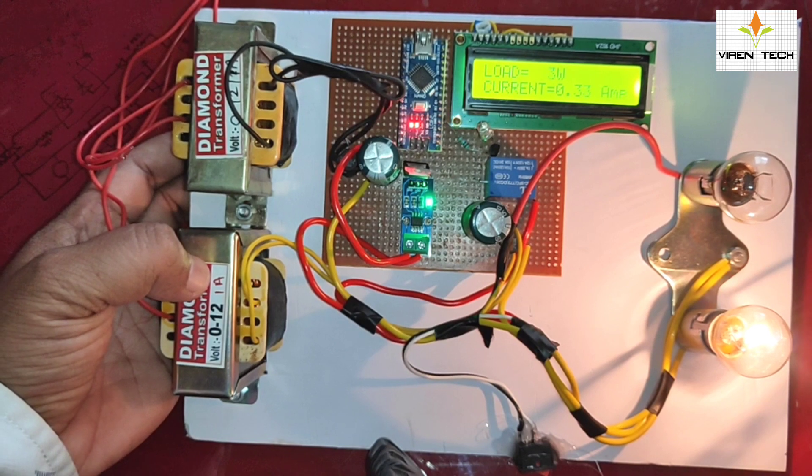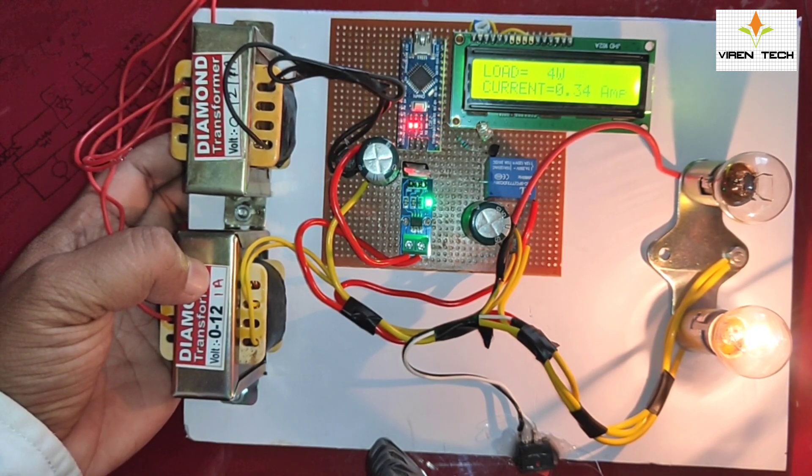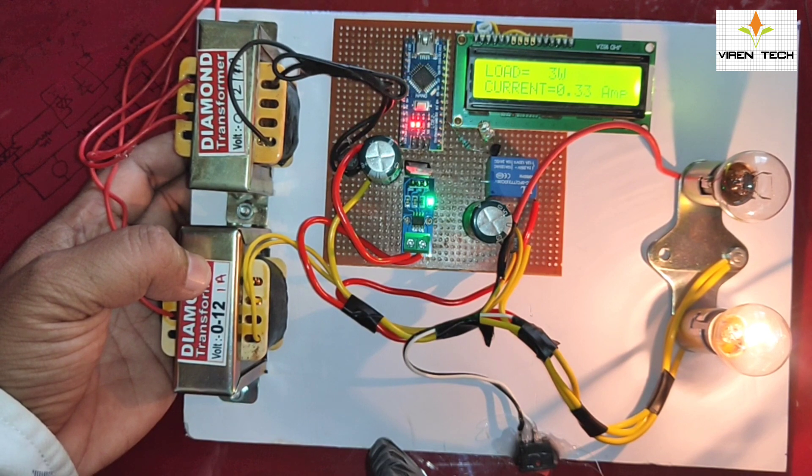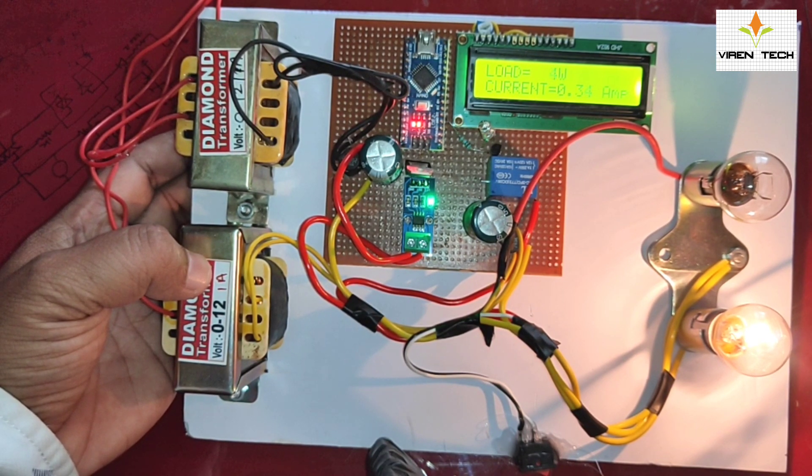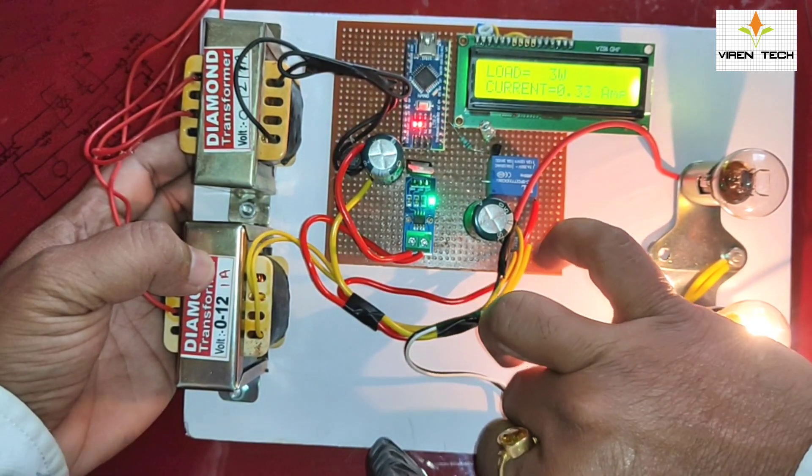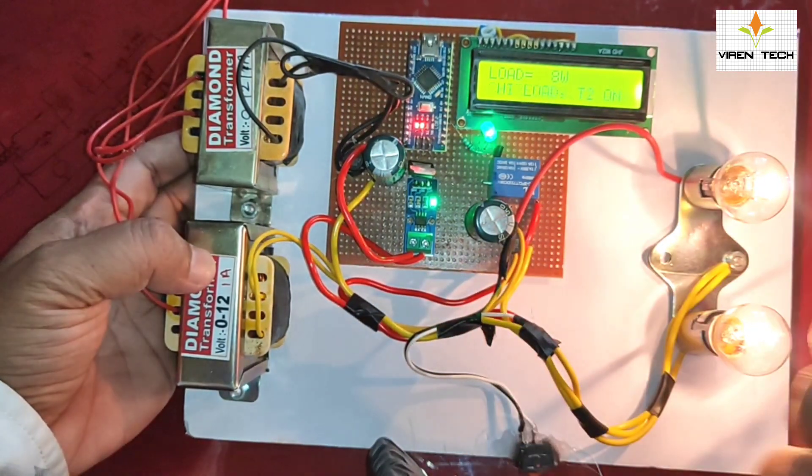It is consuming about 0.34 to 0.35 ampere current. It is in the limits so nothing will happen. Now I am going to turn on the second load by turning on the switch.